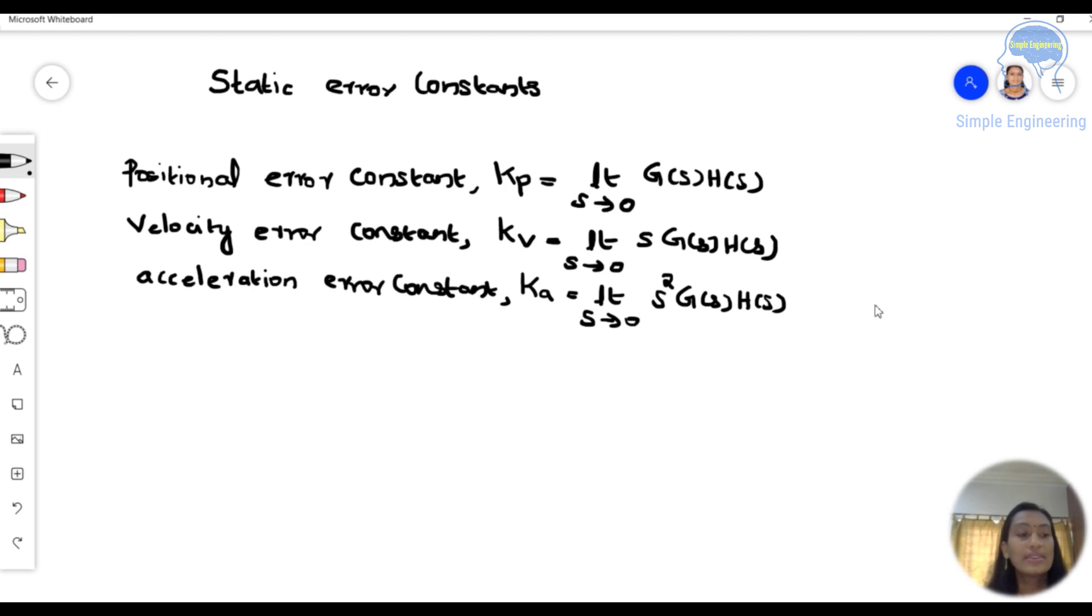So we know that we are having different types of input signal. That is, we have step signal, then ramp and parabolic. And a lot of different other types of signals are there.